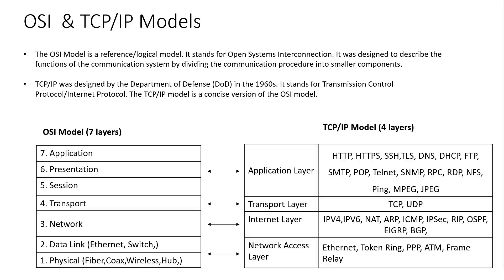As you can see, for each layer we have different kinds of protocols. For example, for the application layer we have HTTP and HTTPS protocol. For the transport layer we have TCP and UDP protocol. For the internet layer we have IPv4 and IPv6 protocol. And for the network access layer we have Ethernet token ring protocol. In the next section of this course we will work with several protocols.